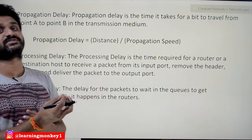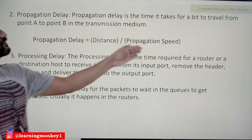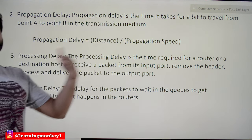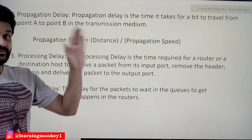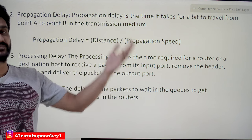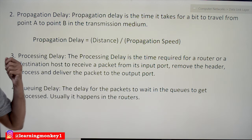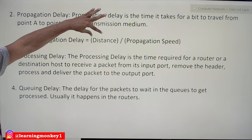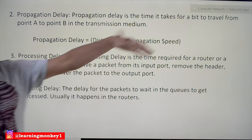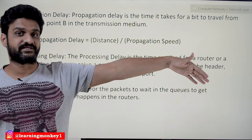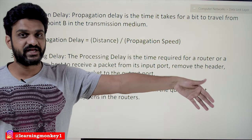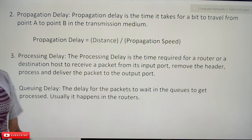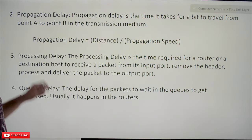Propagation delay is calculated as distance divided by propagation speed. If the propagation speed is less, then the propagation delay is more. If the distance is more, the propagation delay is more; if the distance is less, the propagation delay is less.